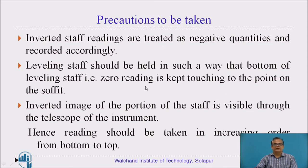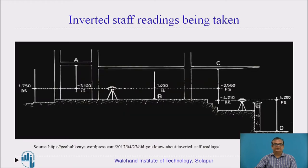Precautions to be taken during inverted staff readings: inverted staff readings are treated as negative quantities and recorded accordingly because the staff is held inverted. The zero reading of the staff is kept touching to the point on the soffit. Through the telescope of the instrument, an inverted image of the part of the staff which is visible is available, so reading is taken from bottom to top to get the correct reading. Here we can see inverted staff reading being taken — this is the slab, its soffit is there, and the inverted staff reading is treated as a negative reading.